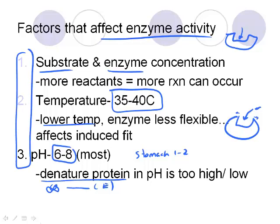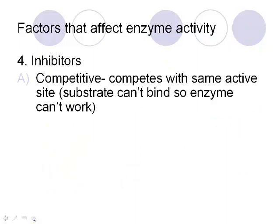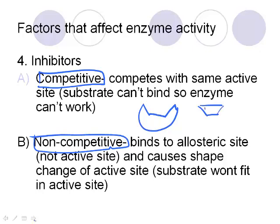All of these factors reduce the effectiveness of the enzyme. The next one is inhibitors — an inhibitor basically stops the enzyme from working. You have two types: competitive and non-competitive. Competitive inhibitors compete for the active site — if an inhibitor fits directly in there and binds, the actual substrate that wants to get in can't because it's blocked. If the substrate can't get in, it can't have a reaction, and therefore the enzyme does not work.